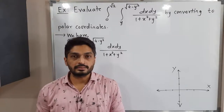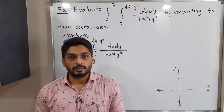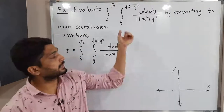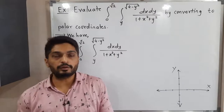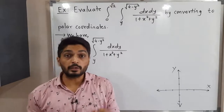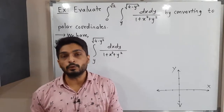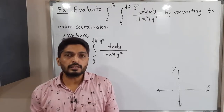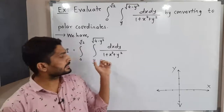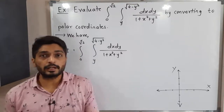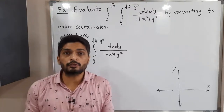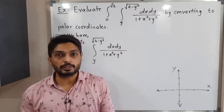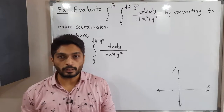Hi everyone, let us discuss this example. In this example, we have a double integration and we have to find its value by converting it into polar coordinates. What we do first is consider these limits, try to find the region of integration first, then convert it into polar coordinates.